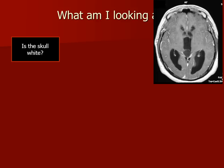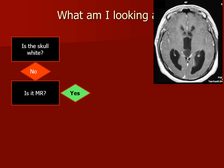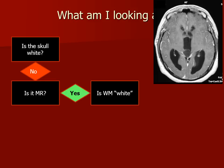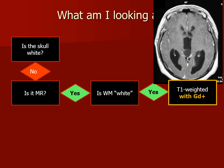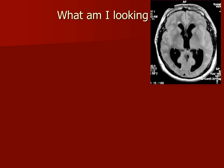Take this image here. The skull is not white. We can see the scalp fat. This is an MR scan. And the white matter is actually slightly higher in signal than the cortical gray matter. So this is a T1 weighted image, and this one happens to have gadolinium.